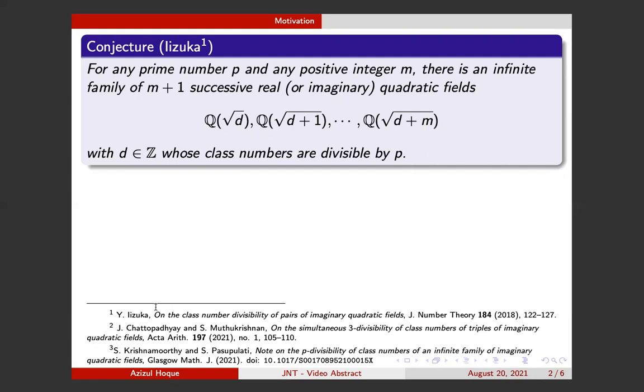In other words, Iizuka proved that there is an infinite family of pairs of imaginary quadratic fields of the form Q(√d) and Q(√(d+1)) whose class numbers are all divisible by 3.